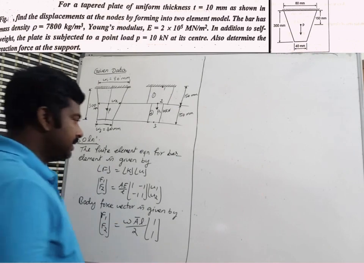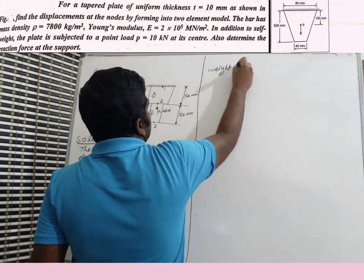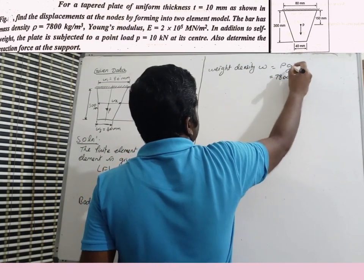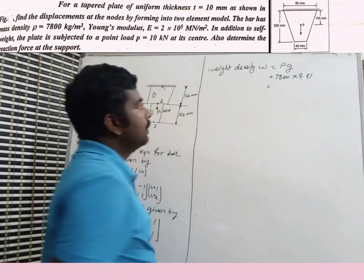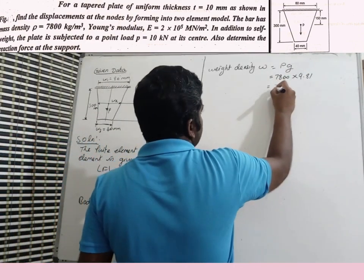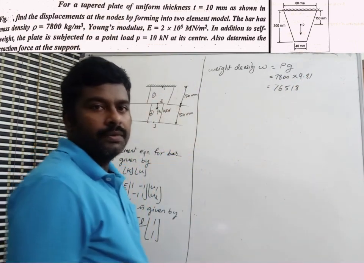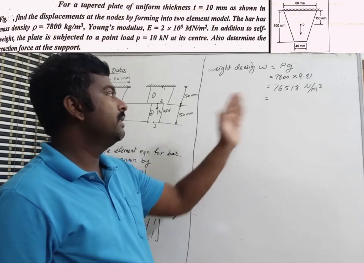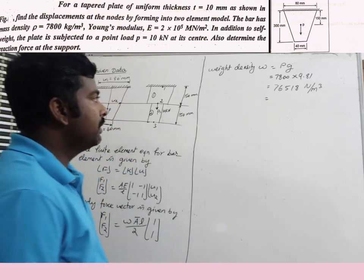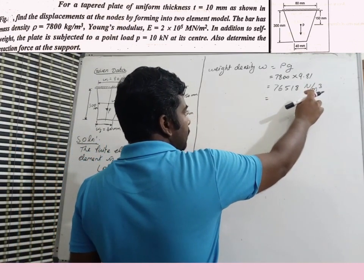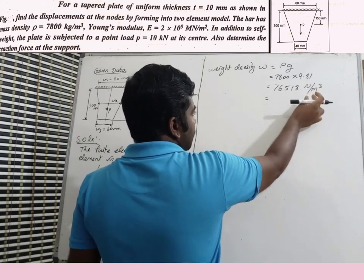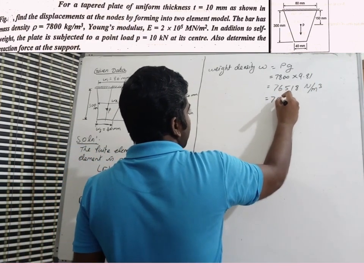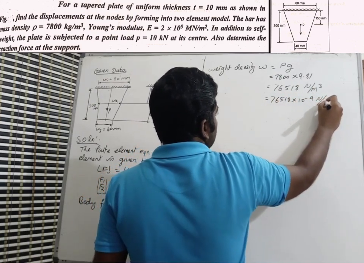Weight density W = ρ × g = 7800 × 9.81 = 76,518 N/m³. Converting units: 1 m³ = 10⁹ mm³, so W = 76,518 × 10⁻⁹ N/mm³ = 7.6518 × 10⁻⁵ N/mm³. Unit conversion is very important here.